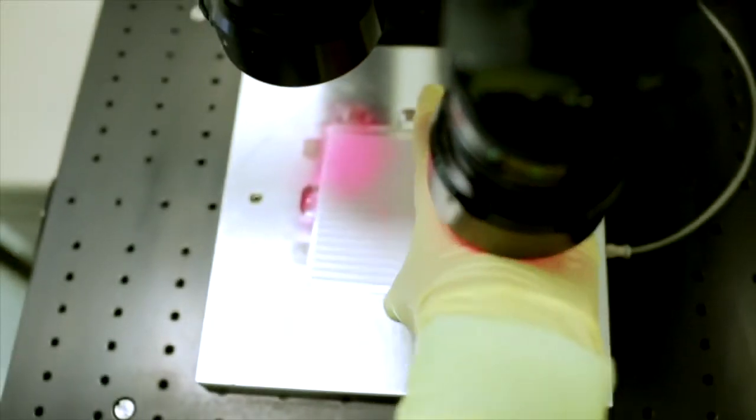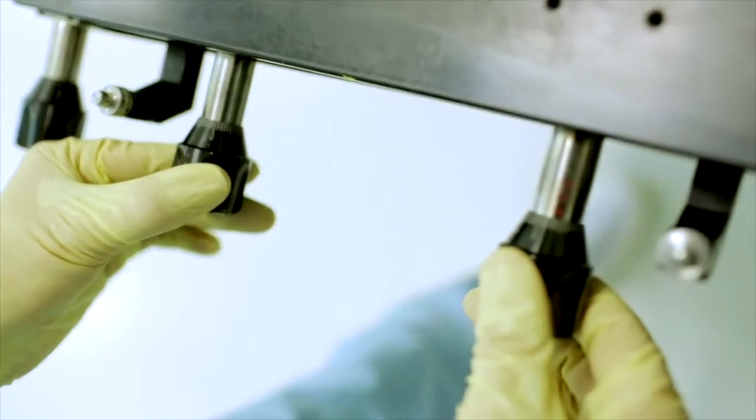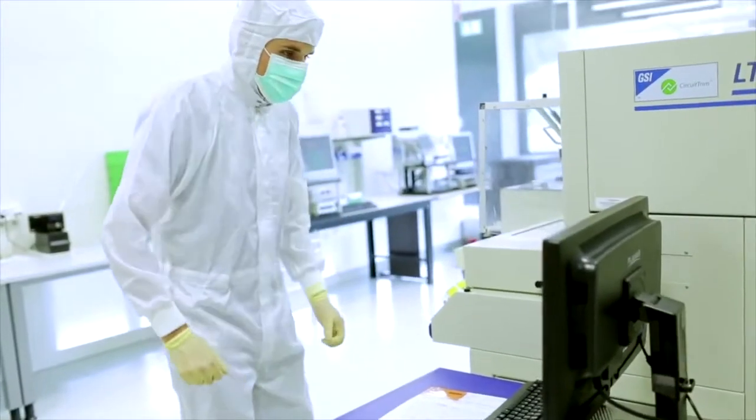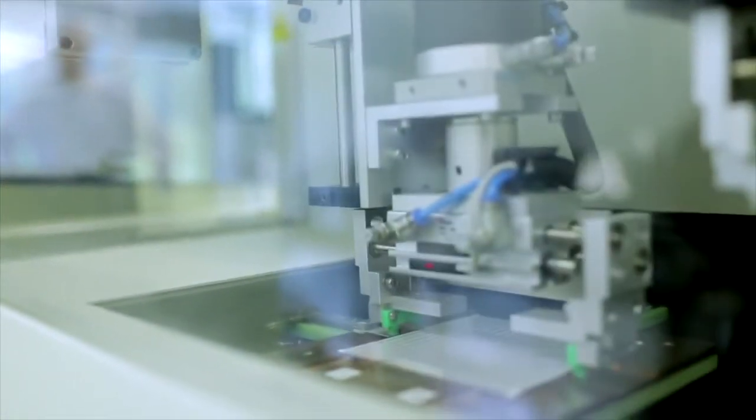Screen printing is used to strengthen the sensor pads and to protect the sensor structure. The sensor is individually laser trimmed to the customer specific resistance.